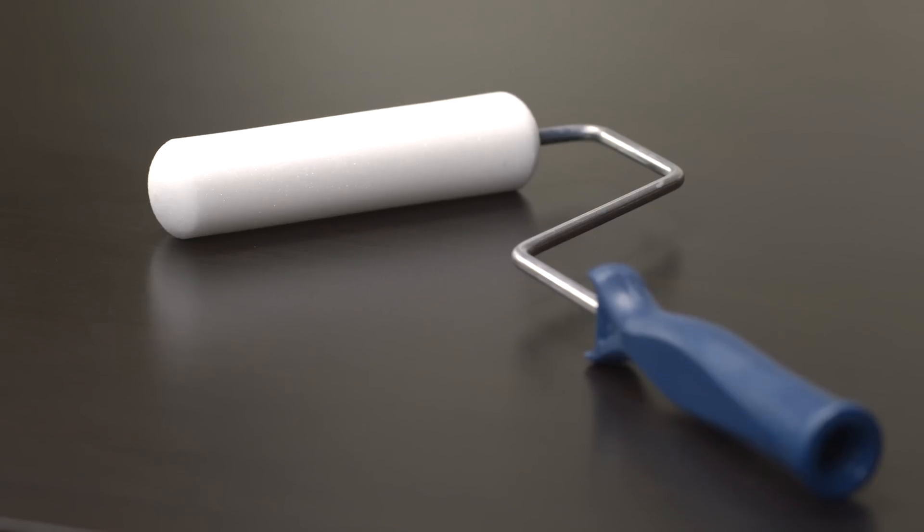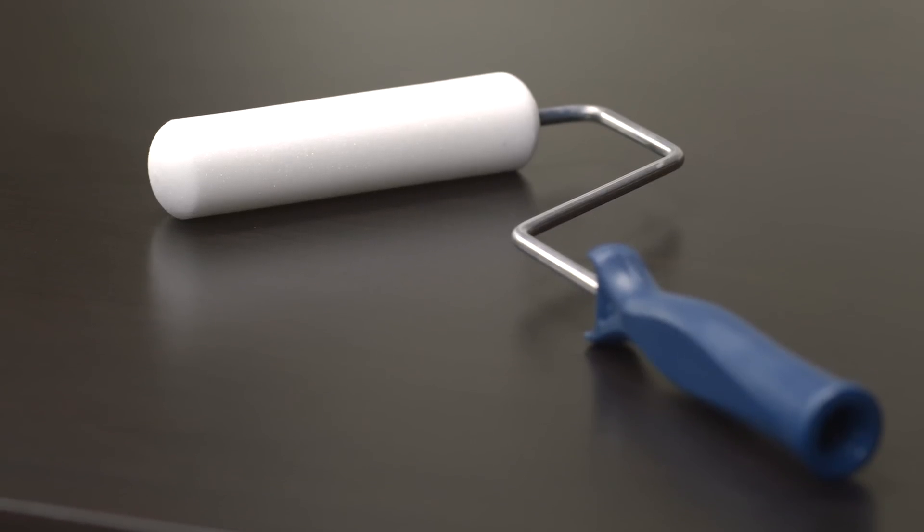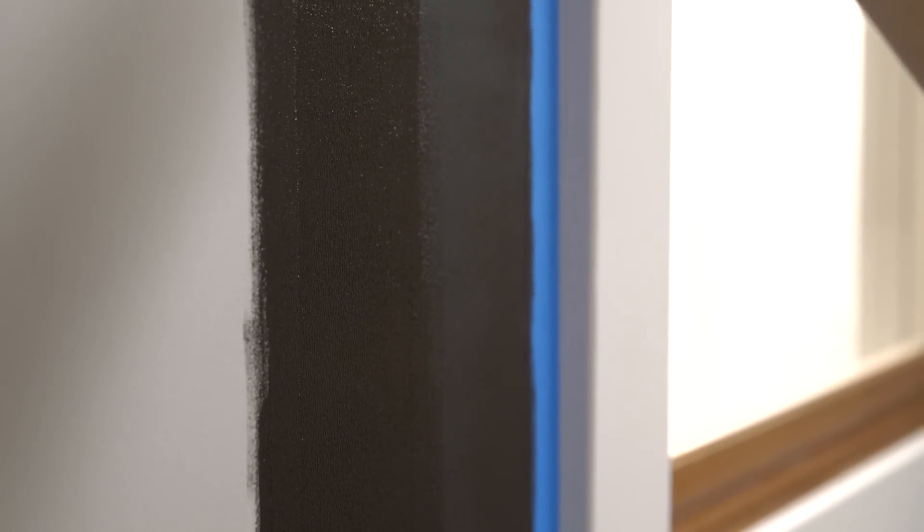To create a smooth finish, use a dense foam roller. Apply Magnetic Primer with a consistent up-and-down motion. The more uniform the surface, the stronger the magnetic attraction.